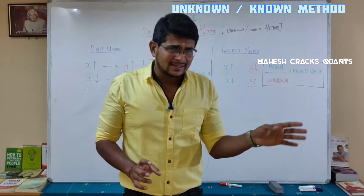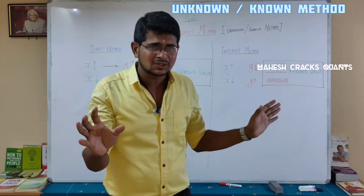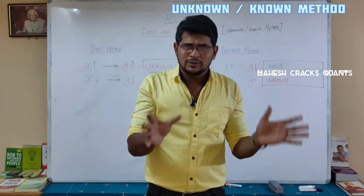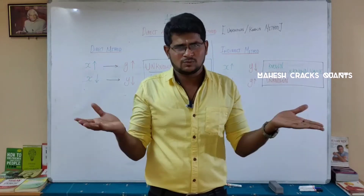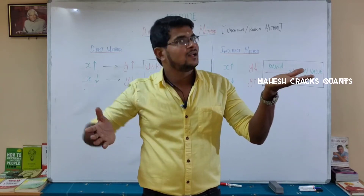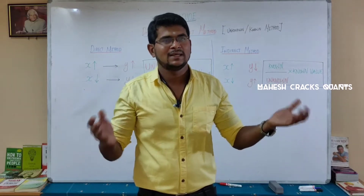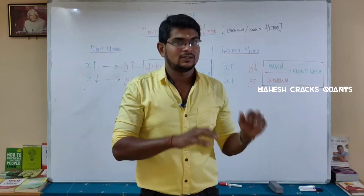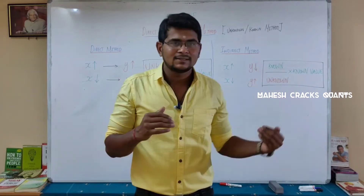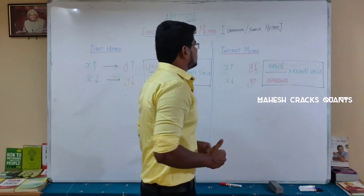Direct proportion means if two variables x and y are there, and the x value is increased, the y value is also increasing. If x value decreases, y value is also decreasing. This is the direct method — directly proportional means if one increases, the other also increases; if one decreases, the other also decreases.